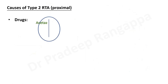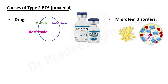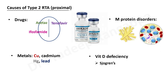Causes of type 2 RTA include drugs: acetazolamide, tenofovir, ifosfamide, and amikacin. M-protein disorders like amyloidosis and paraproteinemia or plasma cell dyscrasias can cause type 2. Heavy metals — copper, cadmium, mercury, lead — can also cause it. Vitamin D deficiency, Sjogren's syndrome, and paroxysmal nocturnal hemoglobinuria (PNH) are other recognized causes.